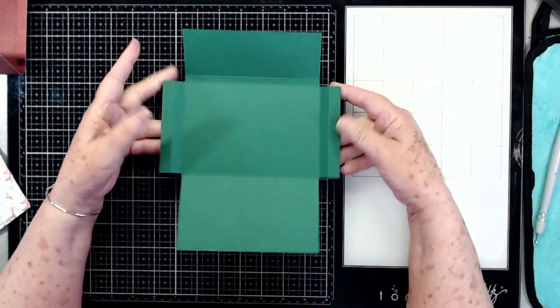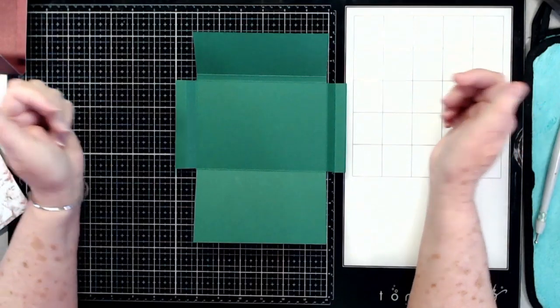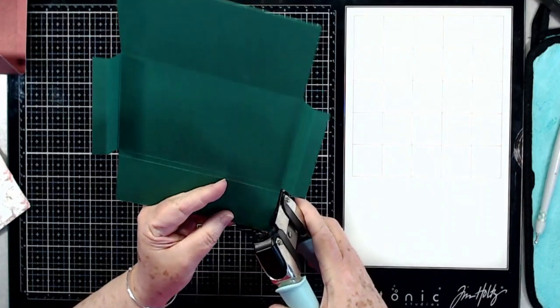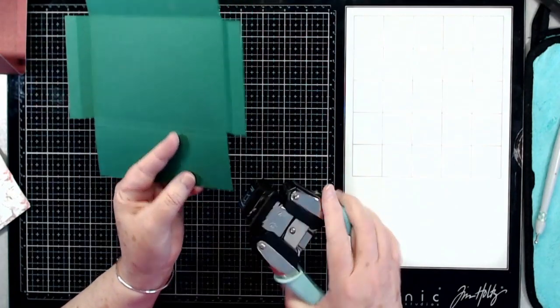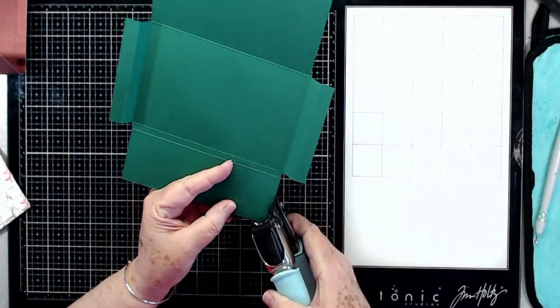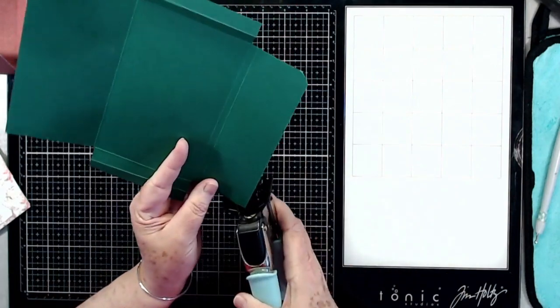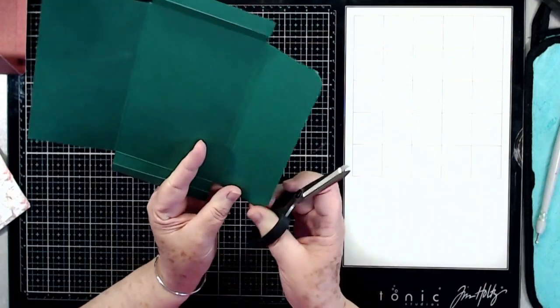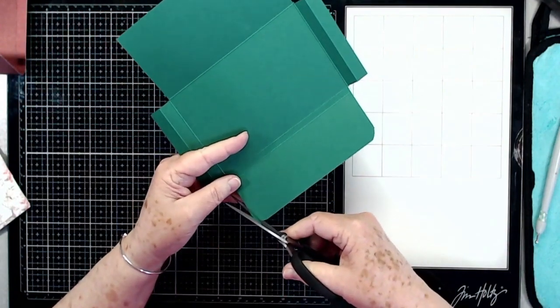Okay, we have all of that cut away. This is the top, the one that has the smaller rectangle. I'm going to go ahead and use my corner chomper and cut those off using the half-inch side.